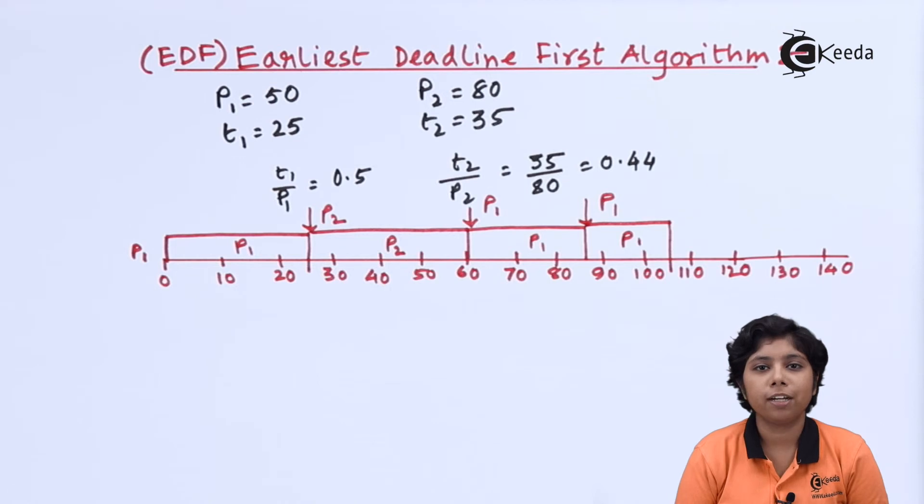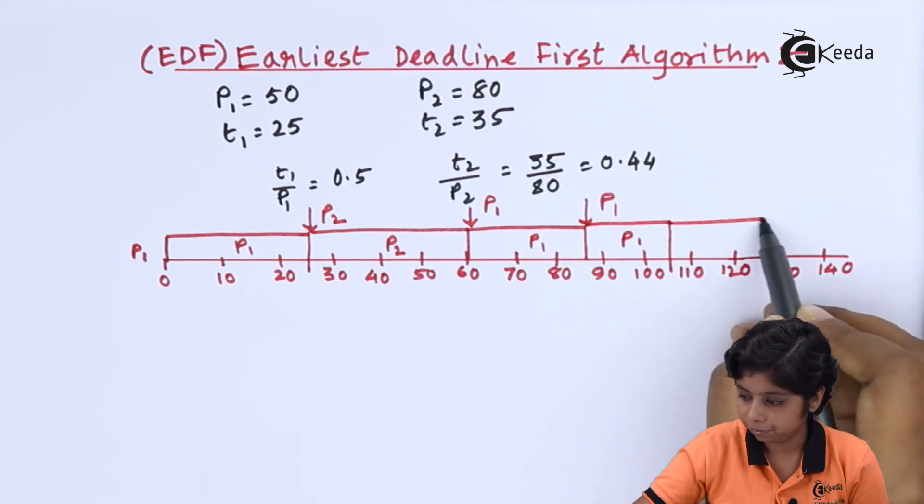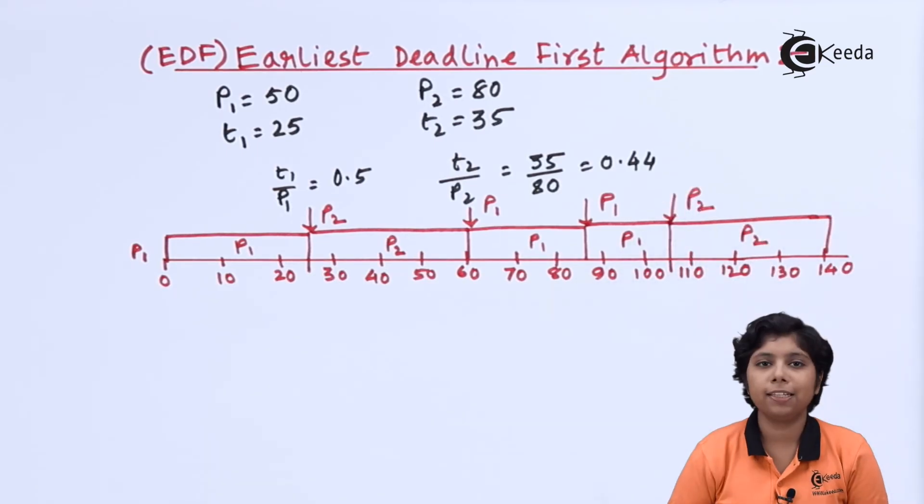Now P1's deadline is 200, whereas P2's deadline is 160. So here P2 will be given the CPU to finish its execution. In this way, P1 will again be scheduled and P2 will again be scheduled. So EDF becomes optimal for this process allocation.